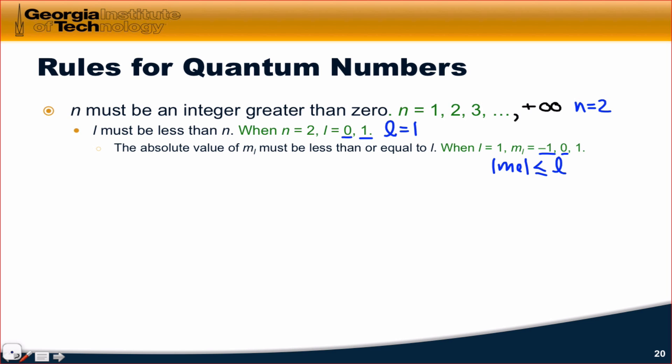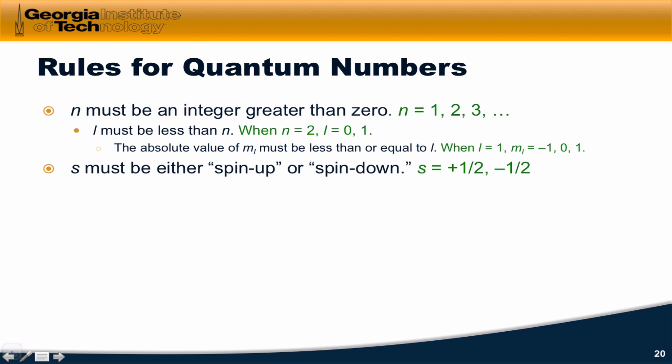m sub l can only be negative 1, 0, or 1. And all of these can only be integers, by the way. The spin quantum number s must be either plus 1 half or minus 1 half.